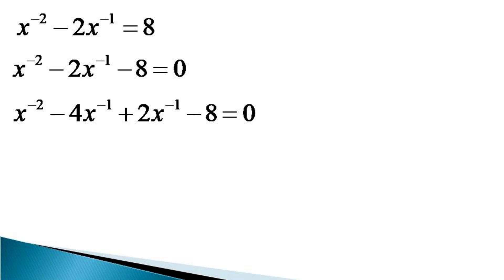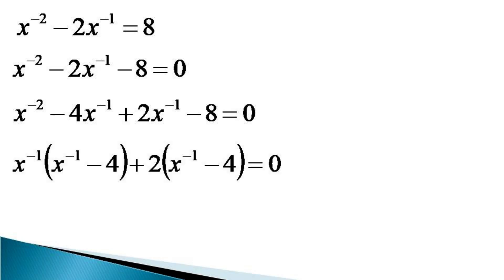We can take x raised to the power minus 1 common from the first two terms and 2 common from the last two terms to get x raised to the power minus 1 into (x raised to the power minus 1 minus 4), plus 2 into (x raised to the power minus 1 minus 4), is equal to 0.